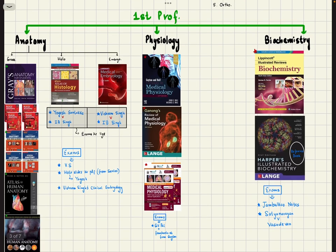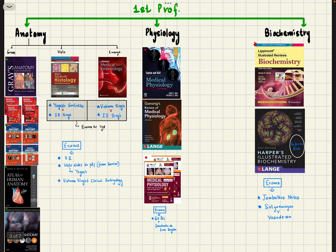If I discuss the resources you ought to use for first prof, you have three subjects: anatomy, physiology and biochemistry. Anatomy is further divided into gross anatomy, histology and embryology.